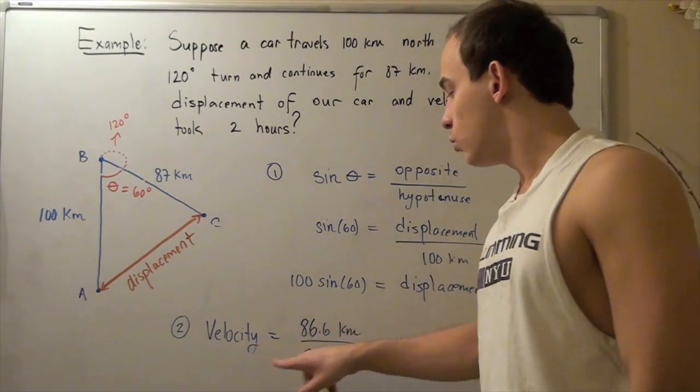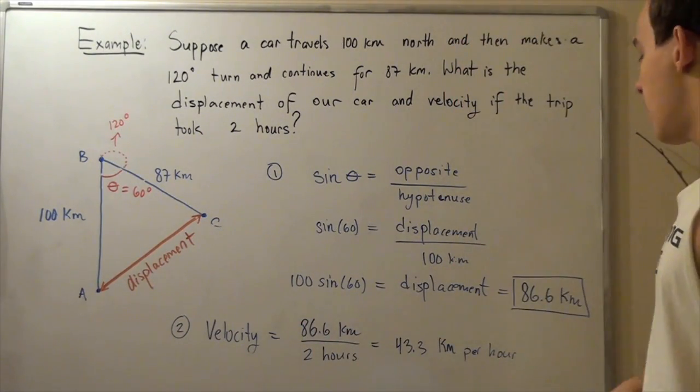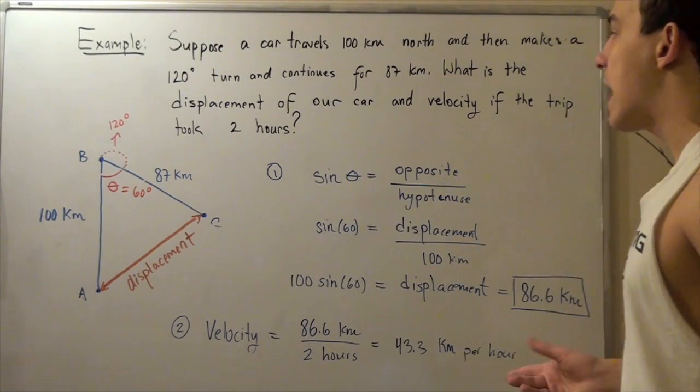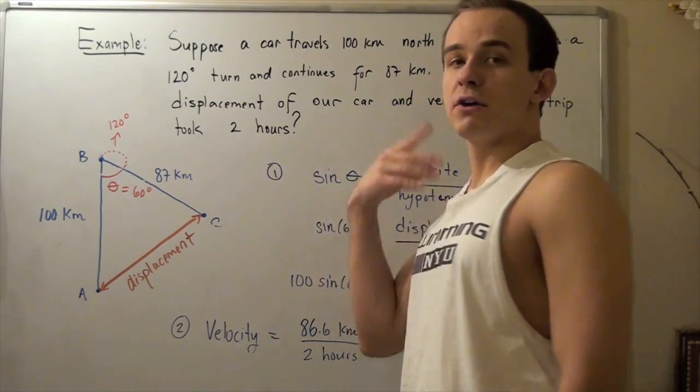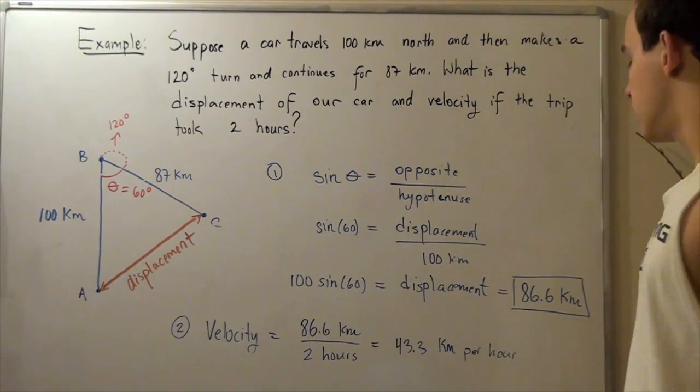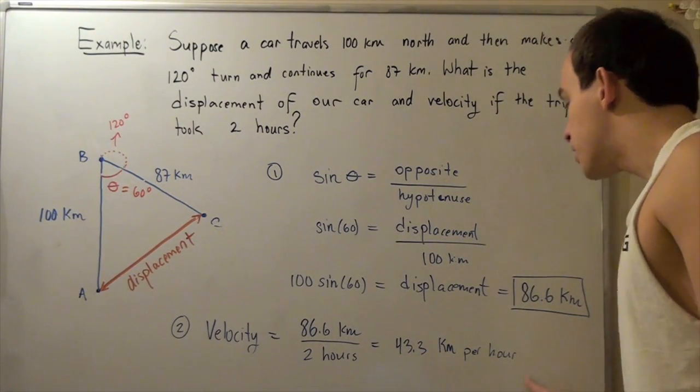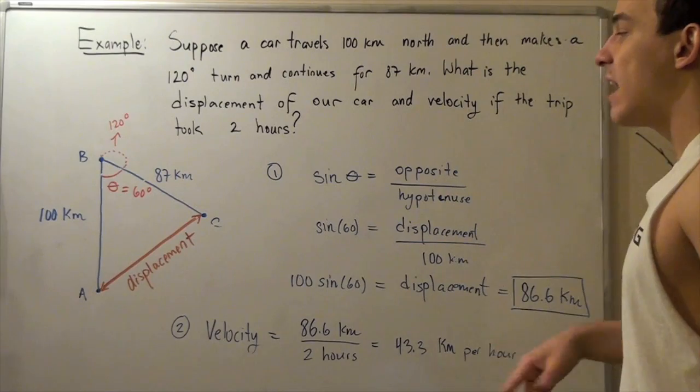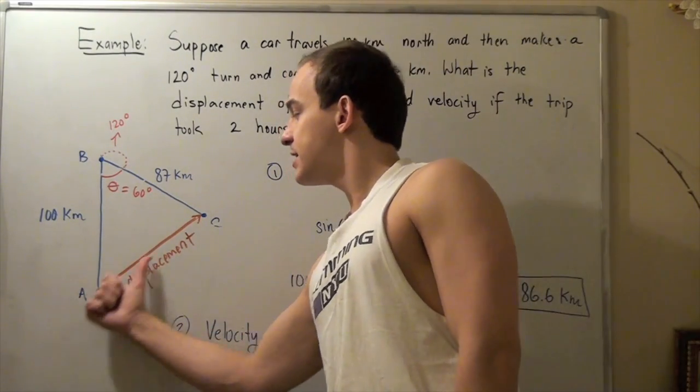Velocity equals 86.6 kilometers, our displacement, divided by our time of the trip. That gives us 43.3 kilometers per hour. This is our velocity and our direction is this way.